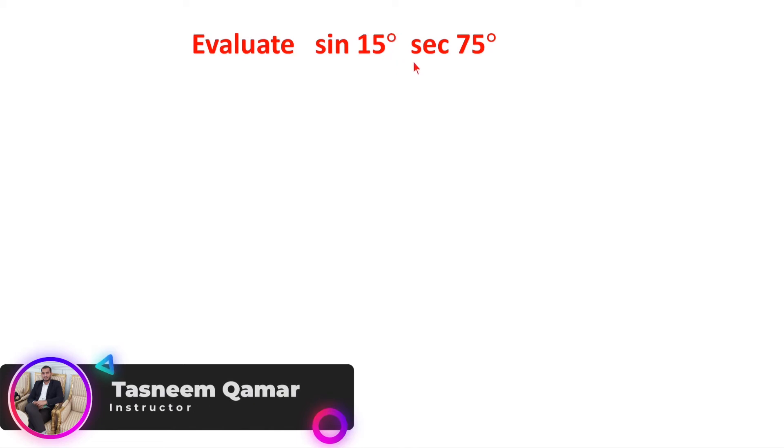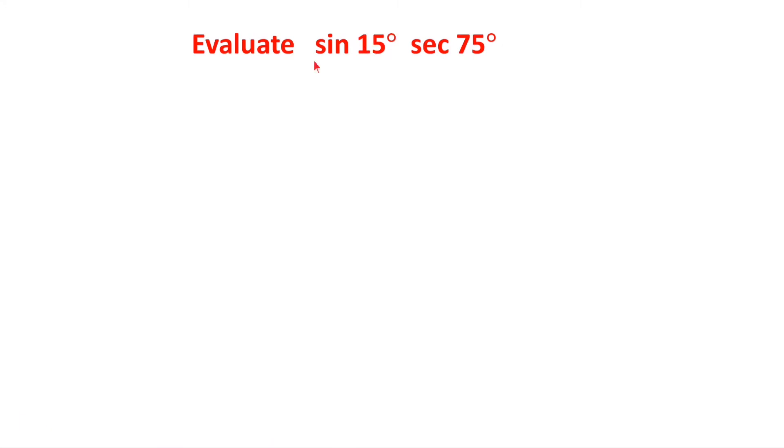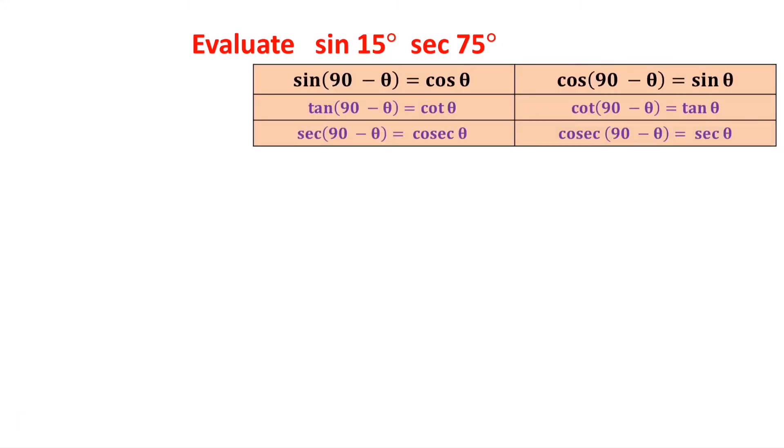Evaluate sine 15 degrees times secant 75 degrees. Now we will convert one of these. We know that sine and cos are complementary values, so we can write sine 15 degrees as sine of 90 minus 15 degrees times secant 75 degrees. Now sine of 90 minus theta